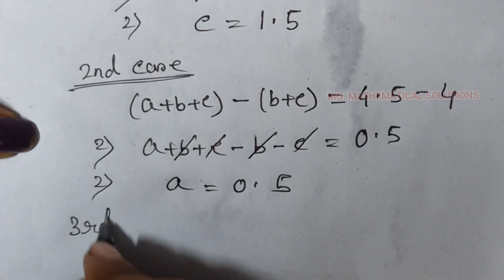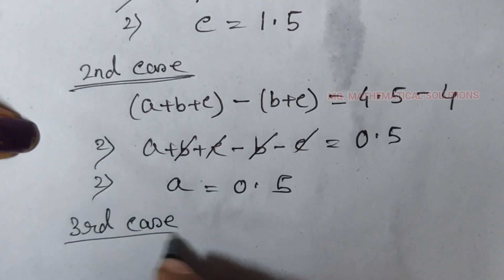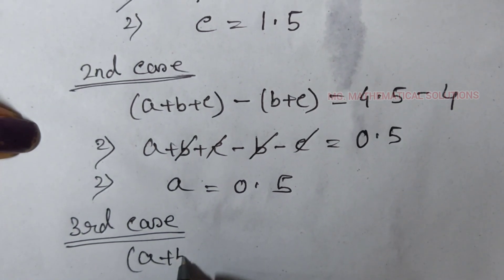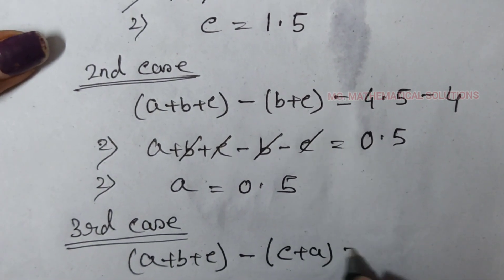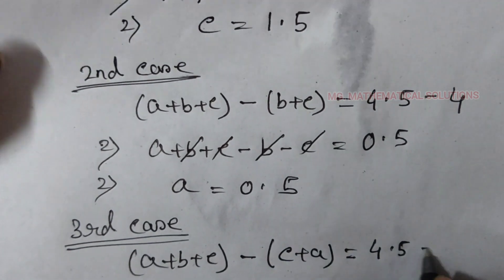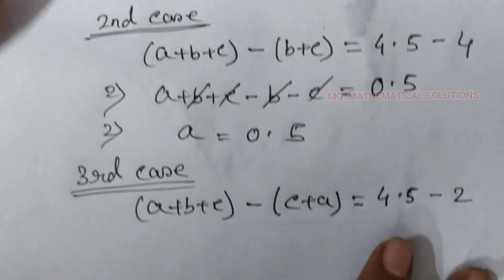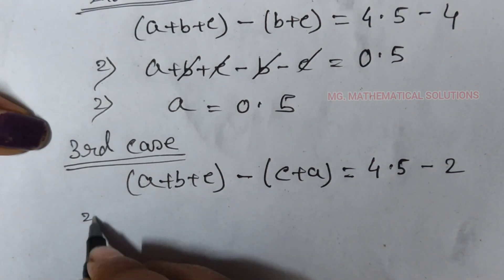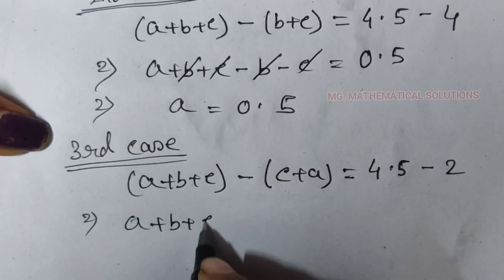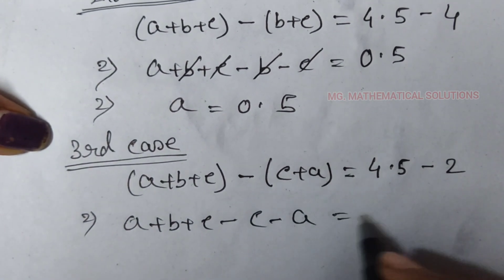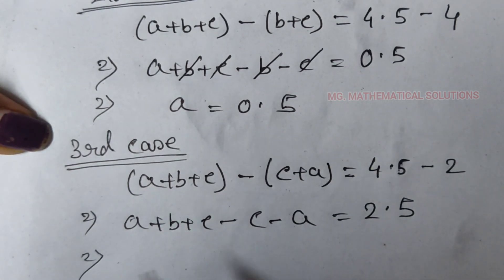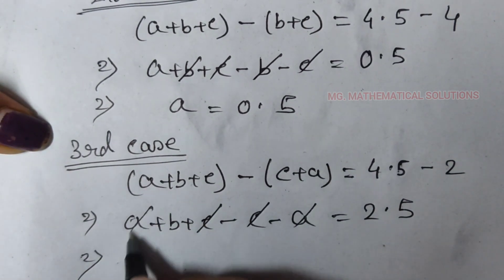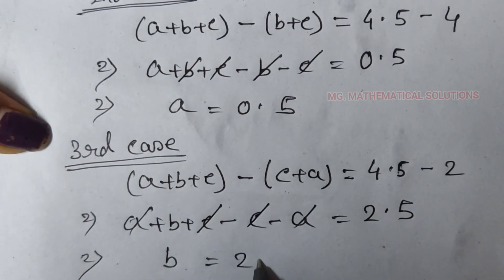Third case. A plus b plus c minus c plus a equal to 4.5 minus 2. This implies a plus b plus c minus c minus a equal to 4.5 minus 2, that's 2.5. C cancelled, a cancelled. So b equal to 2.5.